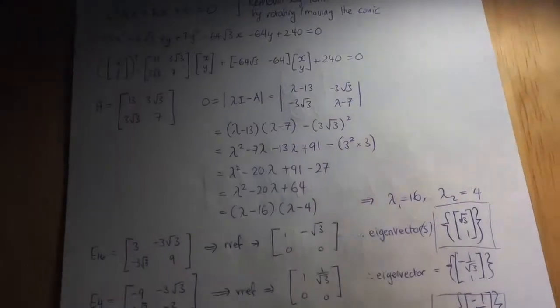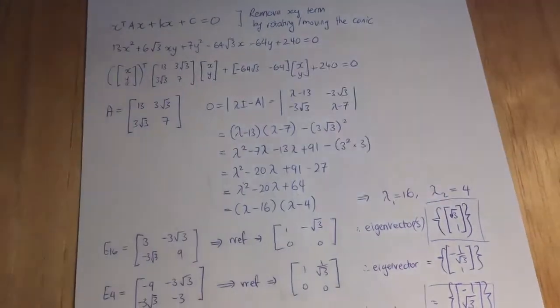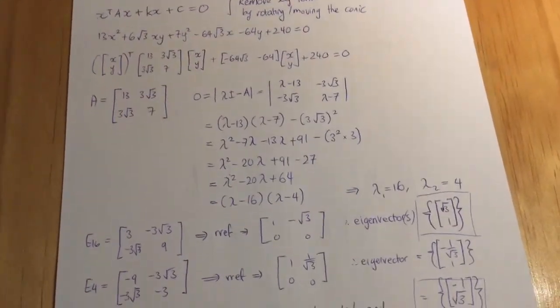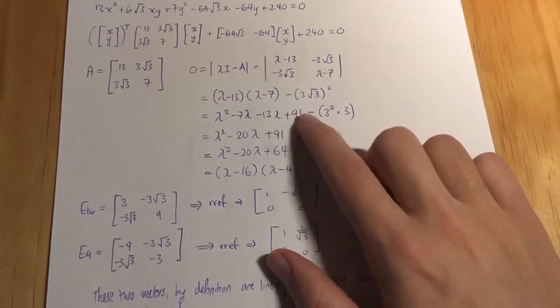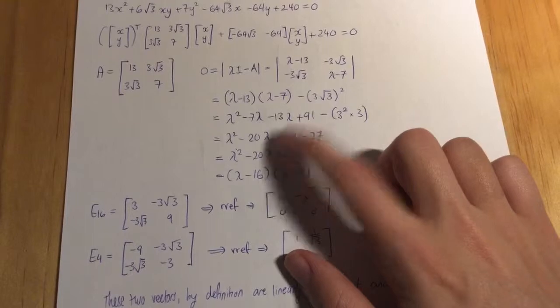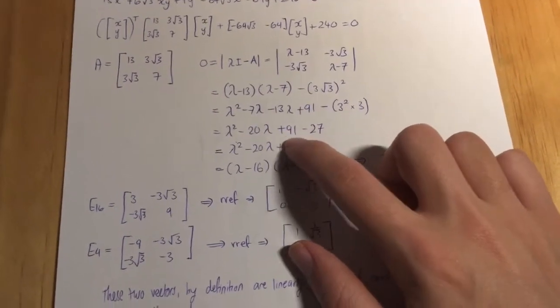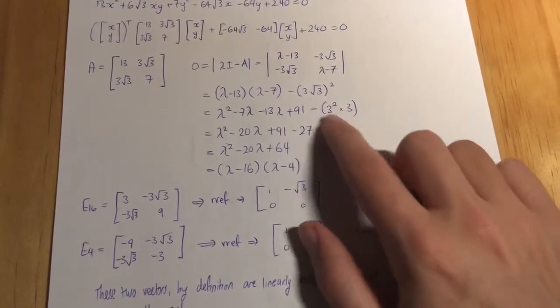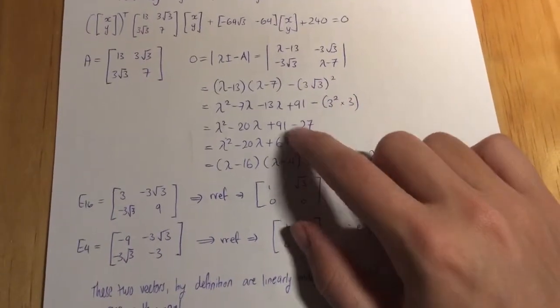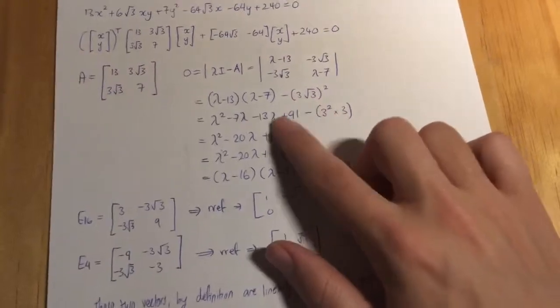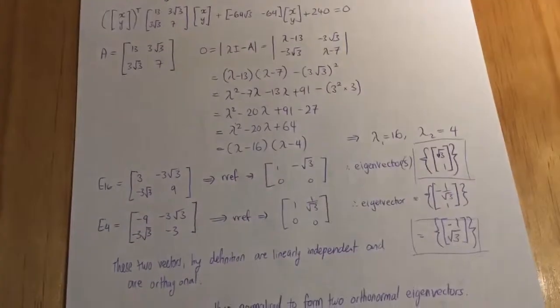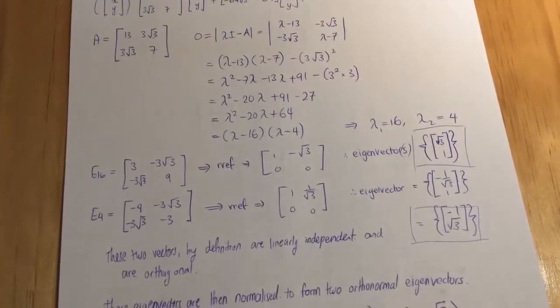So 0 equals the determinant of λI - A. What that basically means is λ - 13, because we're doing identity with lambdas down the diagonal. We're going to get λ - 13, negative there because there's a 0 in the normal identity matrix and we're taking off A. Same with that position there. Then we have λ - 7. We can expand this: λ² - 7λ - 13λ + 91, then - (3√3)².